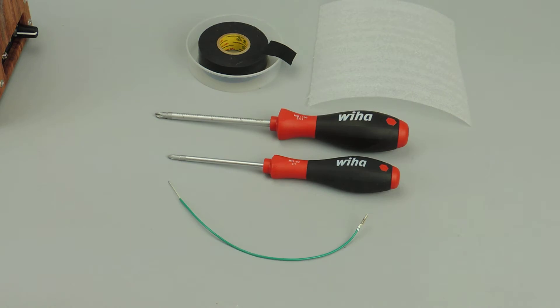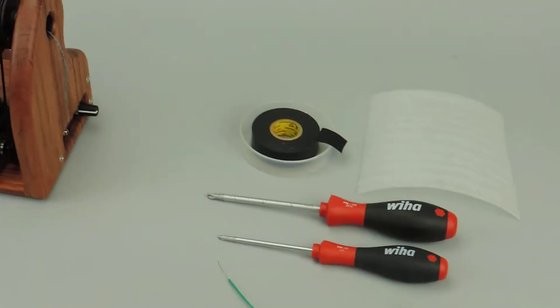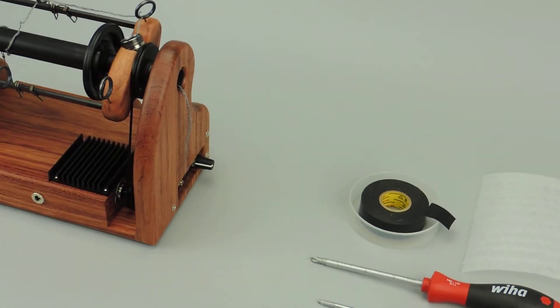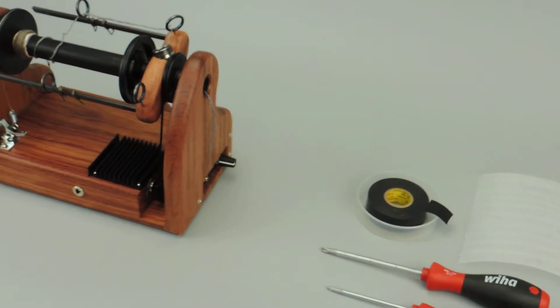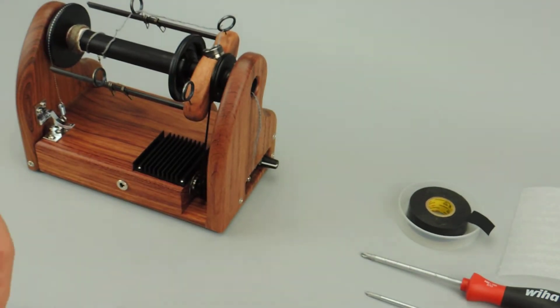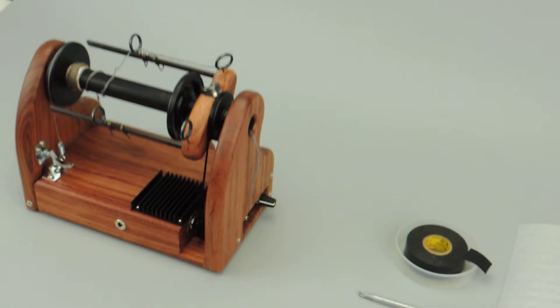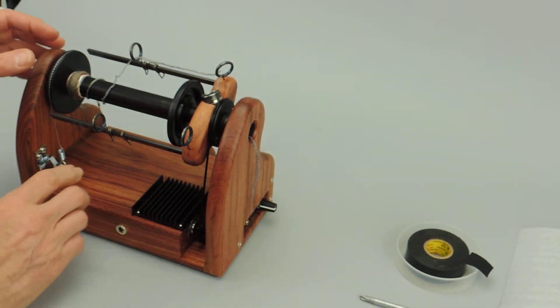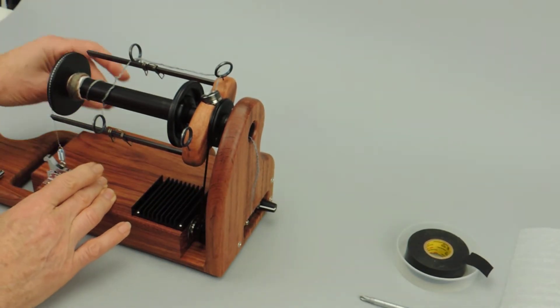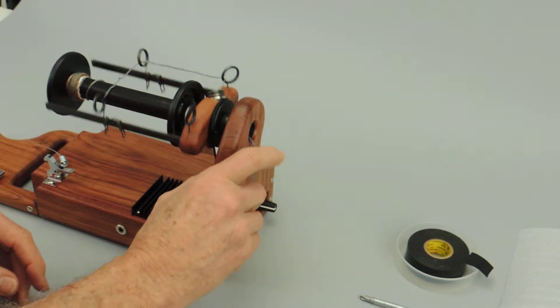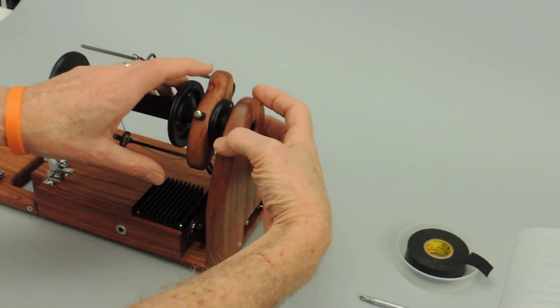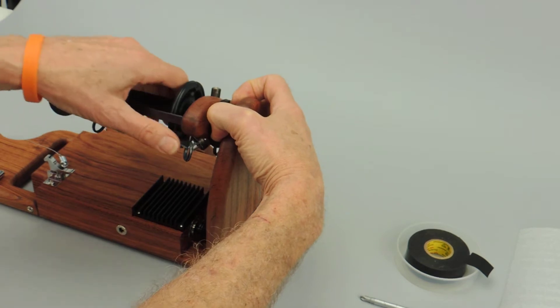The first thing to do is remove the flyer from your mini spinner. Drop the back, remove the brake band, remove the drive band, and then I usually stick my fingers in like this and press it out. Set the flyer and drive band aside.